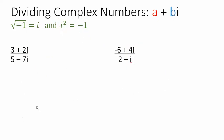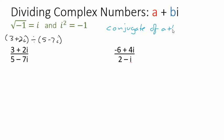The last operation is division. This is a little more work. You have a complex number 3 plus 2i divided by another complex number 5 minus 7i. Here is the trick: do you remember something called the conjugate? The conjugate of a plus bi is a minus bi. The trick for division is to multiply the denominator by the conjugate of the denominator.